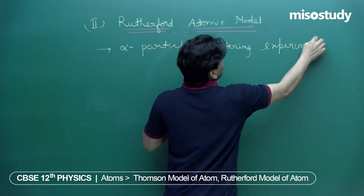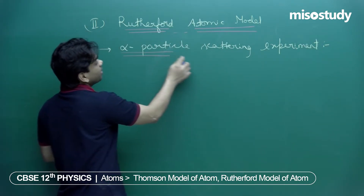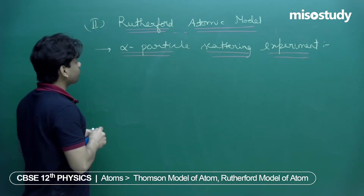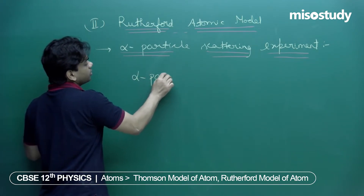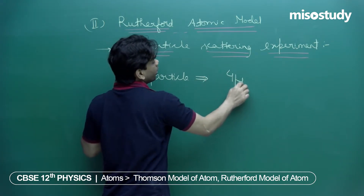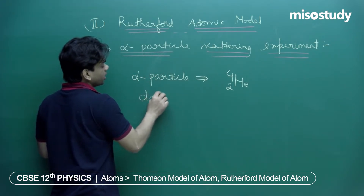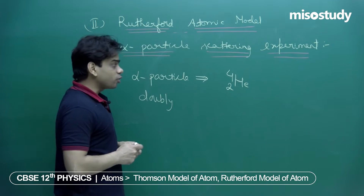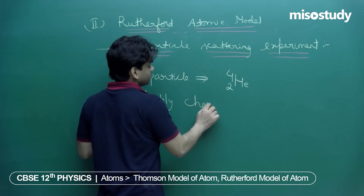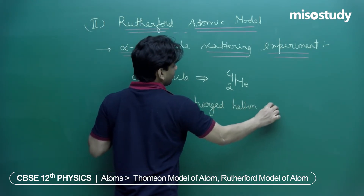An alpha particle is a doubly charged helium nuclei, written as ⁴He²⁺. That means there is no electron — we are talking entirely about the nucleus of the helium atom. A doubly charged helium nuclei is the alpha particle.